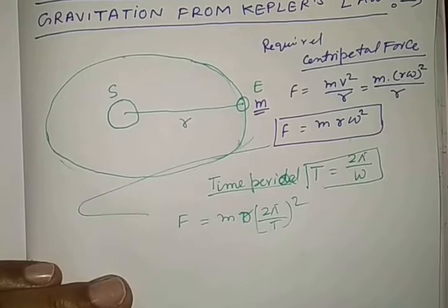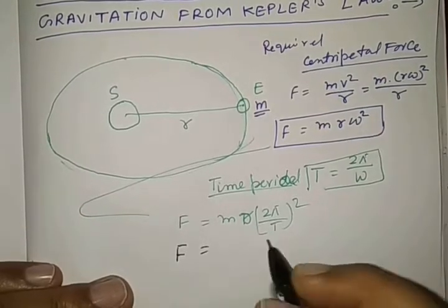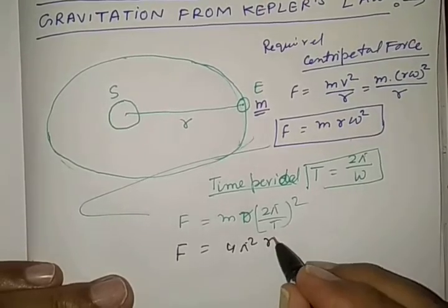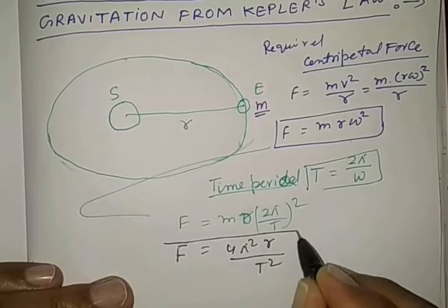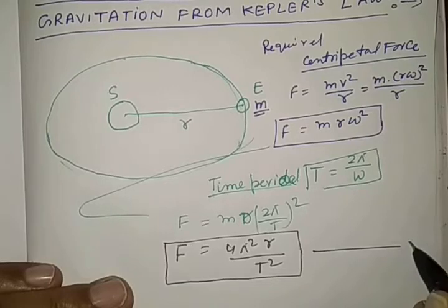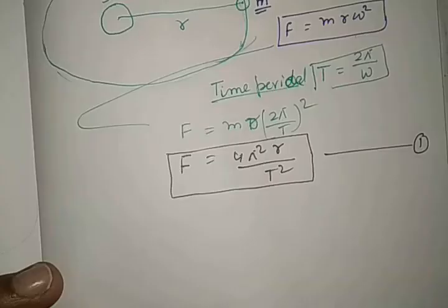So, by keeping this value, we may write F is equal to 4 pi square m r by T square. The required centripetal force can be written by this formula and represented by equation number 1.